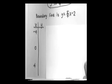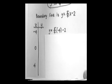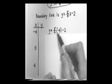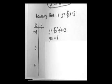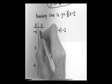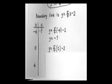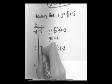Filling in x equals negative 4: y equals 5 fourths times negative 4, minus 2. That gives us negative 20 fourths, which is negative 5, minus 2, which is negative 7. So the first point is negative 4, negative 7. For x equals 0: y equals 5 fourths times 0, minus 2, which is 0 minus 2, so y equals negative 2. The second point is 0, negative 2.